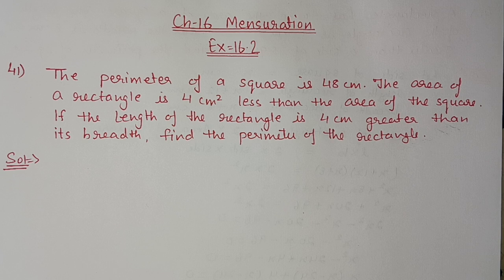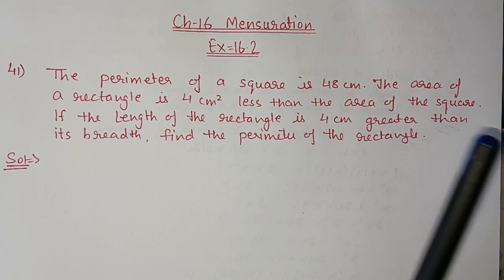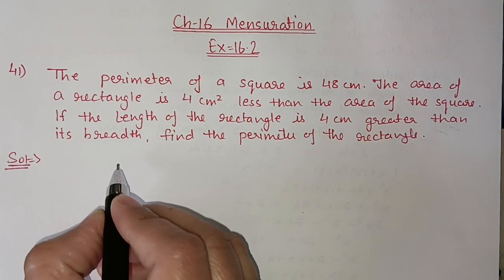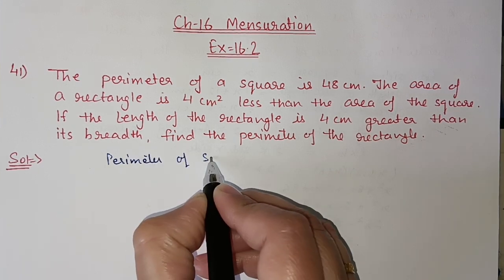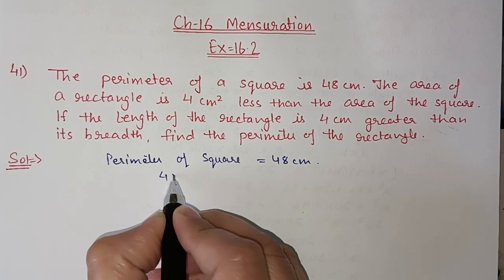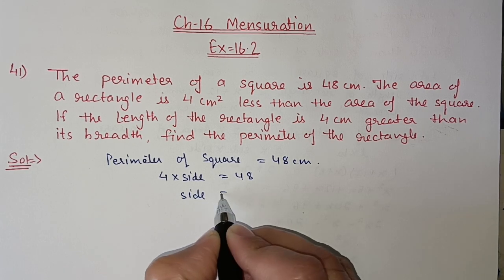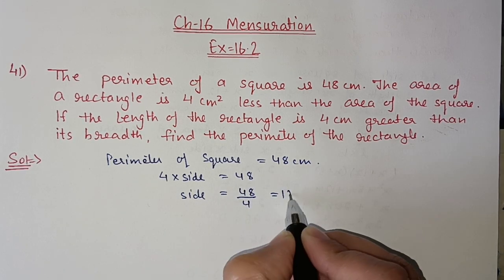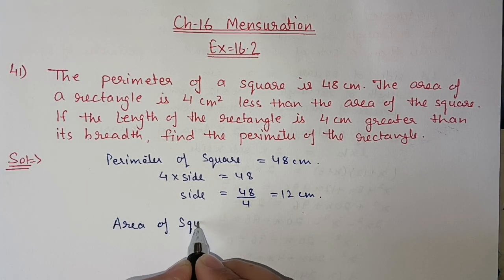Here, the perimeter of the square is given. With the help of that we will find out the area of the square, and with the area of the square we will find out the area of the rectangle. The relation between length and breadth of the rectangle is also given. Perimeter of a square is 48 centimeters, so 4 × side = 48, giving one side = 12 centimeters. Therefore, area of the square = side × side = 12 × 12 = 144 centimeter square.